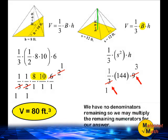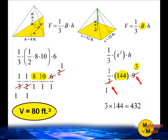At this point all we have to do is multiply 144 by 3, and that will give us the volume of the square pyramid. 3 times 144 is 432. So the volume of the shown square pyramid is equal to 432 cubic feet.